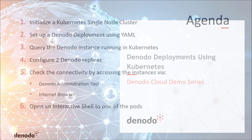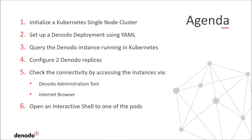Let's start by describing the agenda. First, we will initialize a Kubernetes single node cluster. Then, set up the deployment using a YAML file. After that, querying the node instance running in Kubernetes. Then, we will configure the cluster to run two replicas and test the connectivity again. And to finalize, we will connect to one of the pods using the interactive shell.